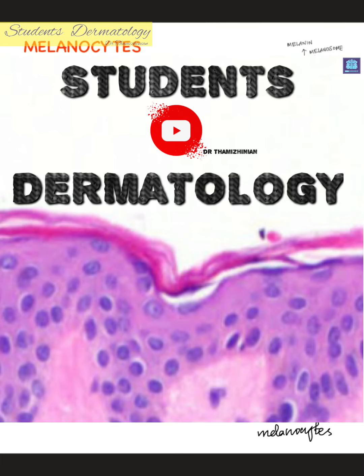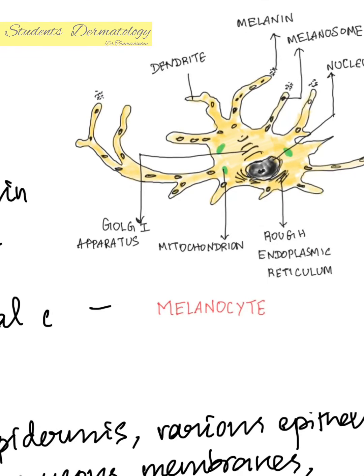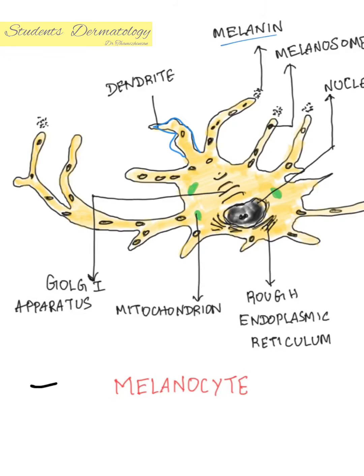In this video we are going to see about melanocytes. Melanocytes are melanin-synthesizing dendritic cells that synthesize and secrete melanin-containing organelles called melanosomes. The processes are called dendrites, and at the tip of the dendrites you can see melanin — this is the melanosome, the melanin-containing organelle.